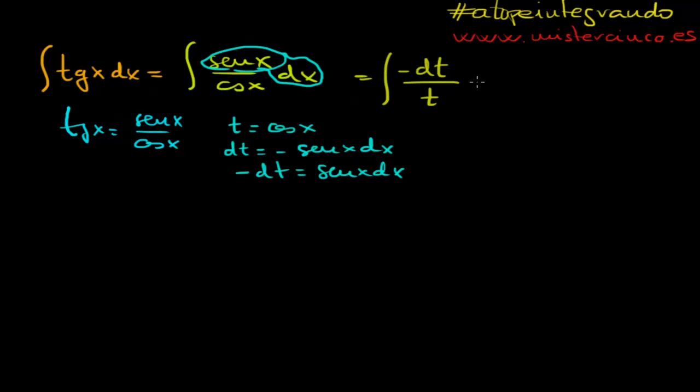So you can do this in just one step. This equals to minus, well, we can pull the minus out of the integral. So you will have here t to the power minus one, so here dt.